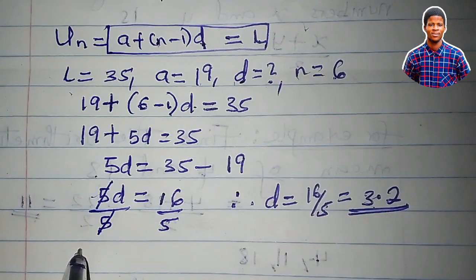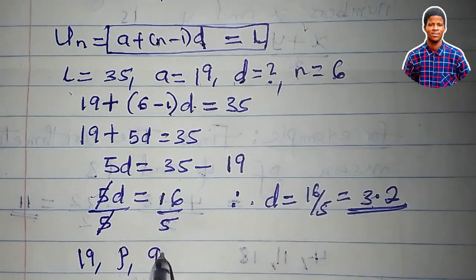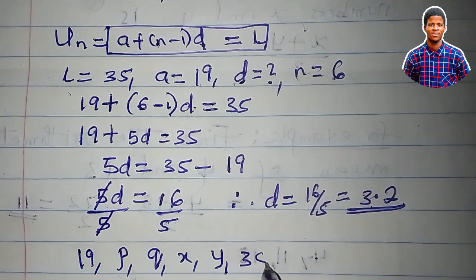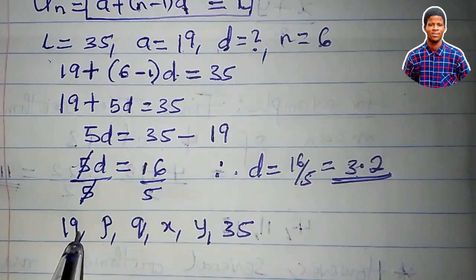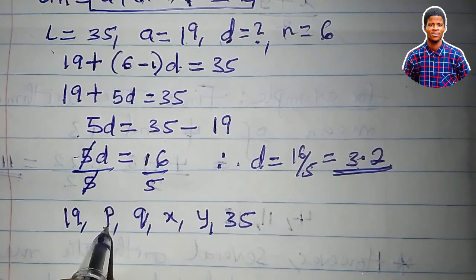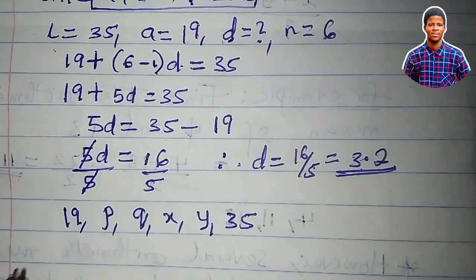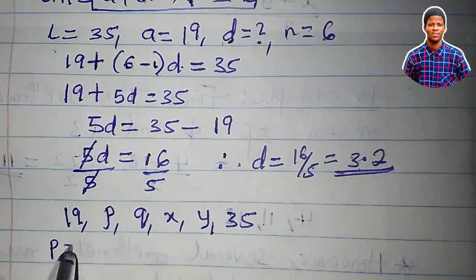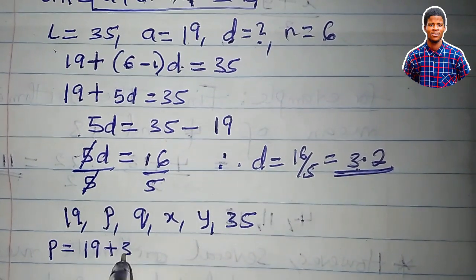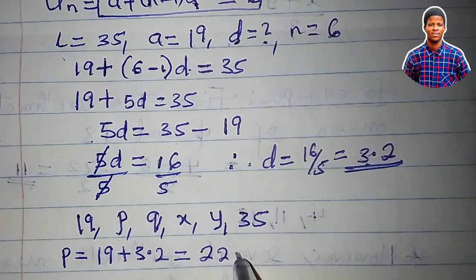The common difference is 3.2. So let us now get the values of this arithmetic means. Let me write the sequence again: 19 comma 35. Now 19 is the first term. To get the second term, which is P, I will add the common difference to 19. So P will be equal to 19 plus the common difference, 3.2, and that is equal to 22.2.